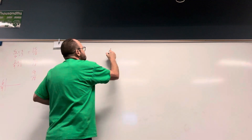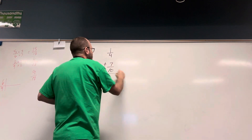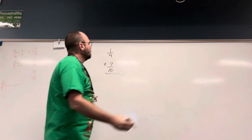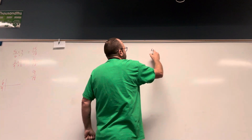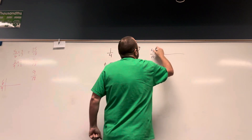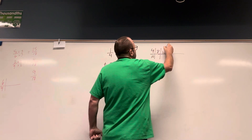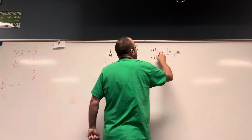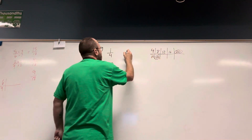One fourth plus seven tenths. The more you do this, the quicker you're going to figure out the common denominators. I need a common denominator for 4 and 10. Multiples of 4: 4, 8, 12, 16, 20. Multiples of 10: 10, 20. So 20 is my common denominator.